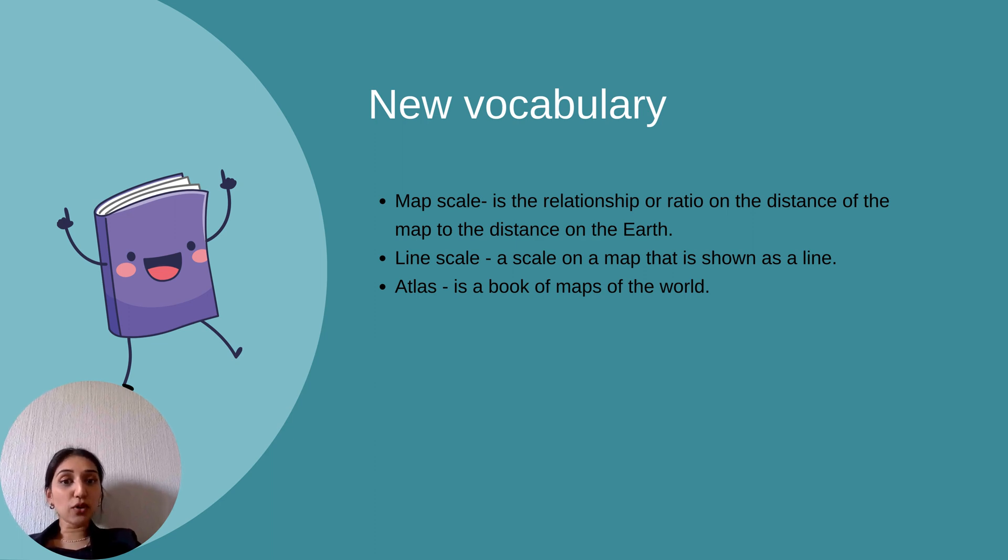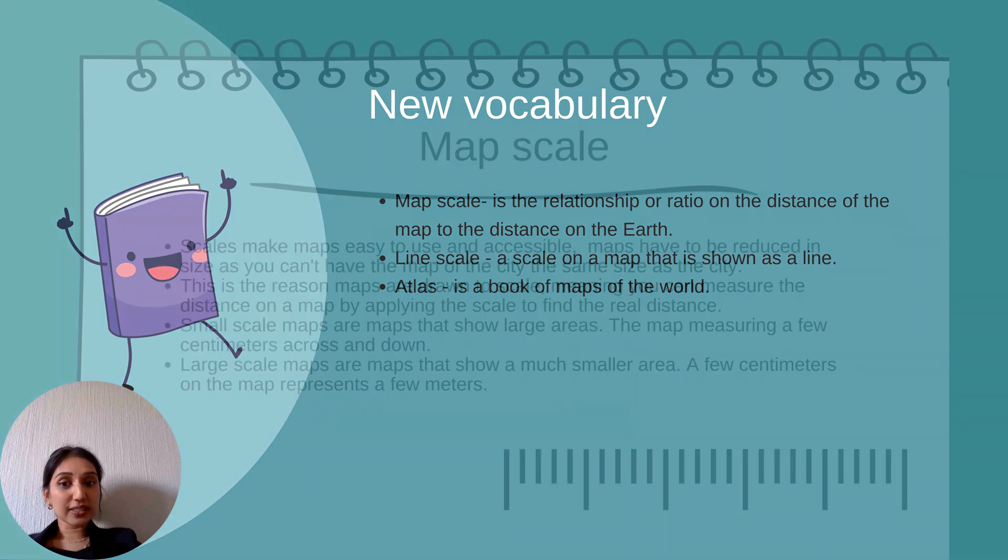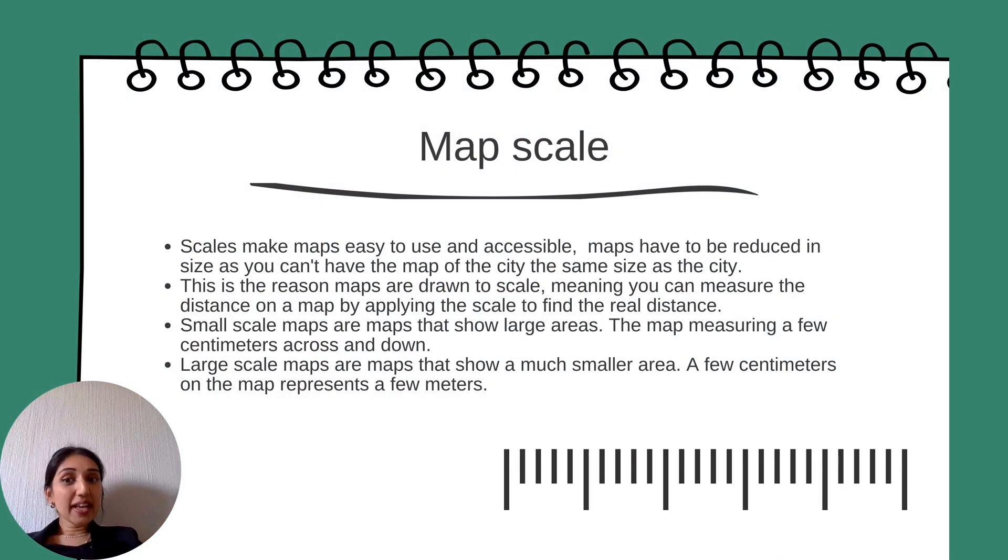Atlas is a book of maps of the world. Map scale: scales make maps easy to use and accessible. Maps have to be reduced in size as you can't have the map of the city the same size as the city.